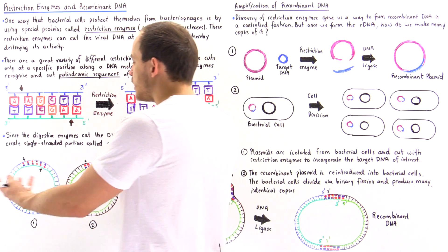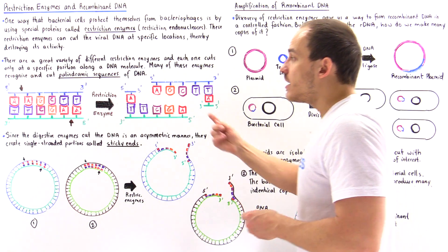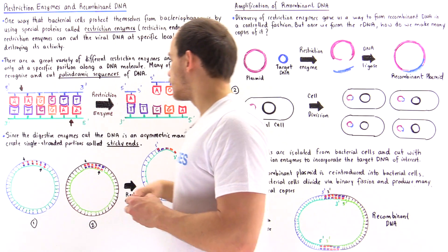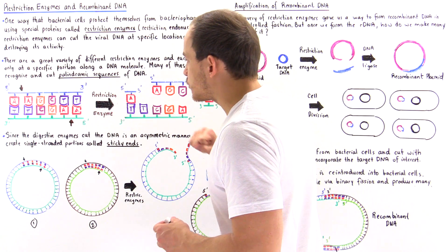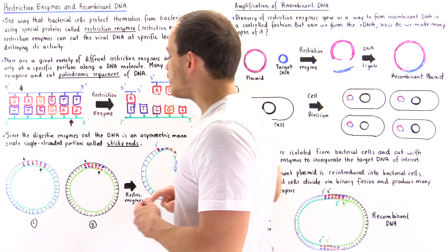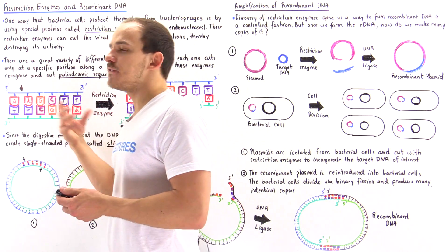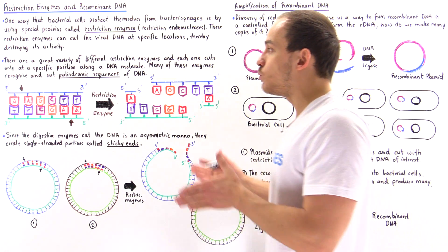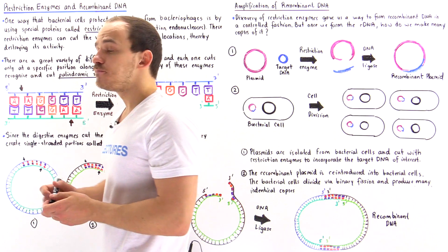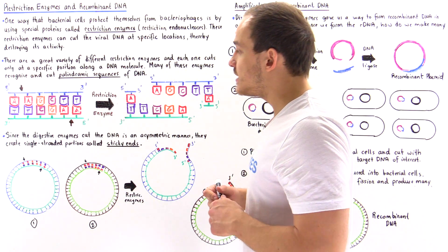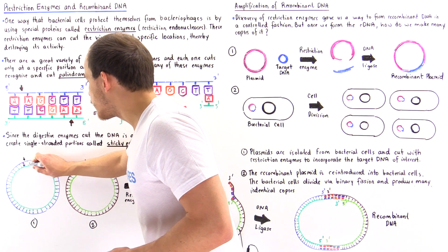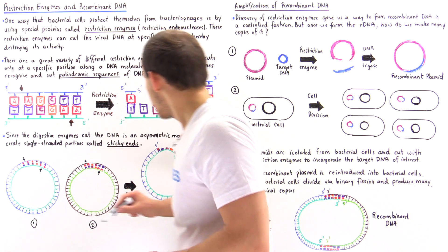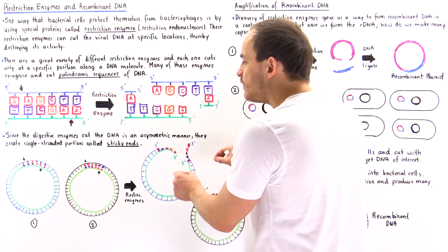Let's suppose we take these two DNA molecules and add the same restriction enzyme we used earlier. That restriction enzyme will move along each DNA molecule until it locates this specific palindromic sequence. Once it locates that palindromic sequence, it will cleave between the adenine bases — the red bases. So it cuts here on molecule one and cuts here on molecule two, forming two sets of uneven sticky ends.